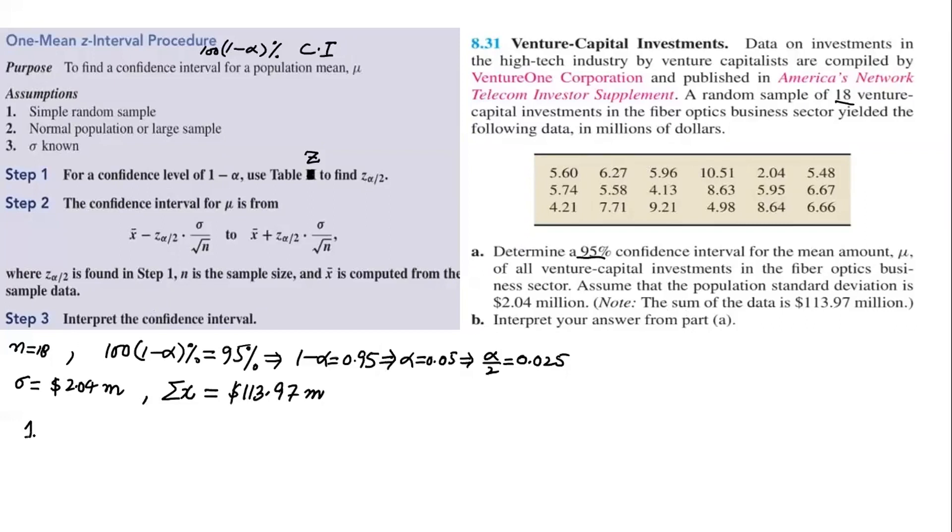To go to step 2, we first need to find Z alpha by 2. Z alpha by 2 means we need Z 0.025. This value can be found from the Z table, which is given at the end of the book. In a different video, we will discuss how to compute Z value from Z table. At this stage, I am giving Z 0.025 directly, and it can also be found from the calculator. So 1.96. This value is 1.96.